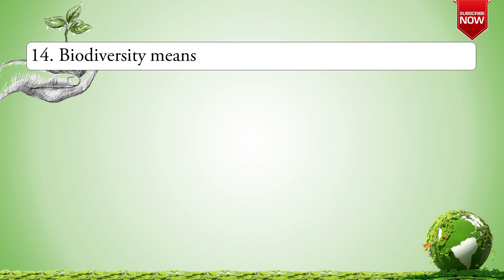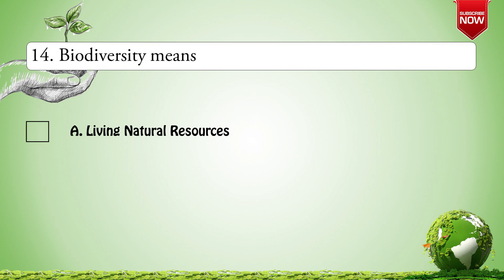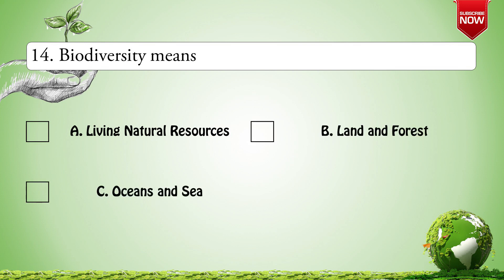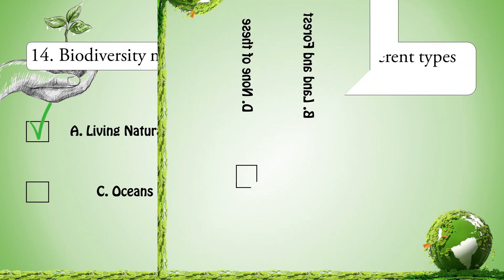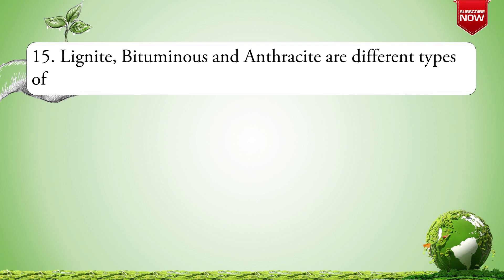Next question: Biodiversity means — Options are: A. Living Natural Resources; B. Land and Forest; C. Oceans and Sea; D. None of these. The correct option is A: Living Natural Resources.